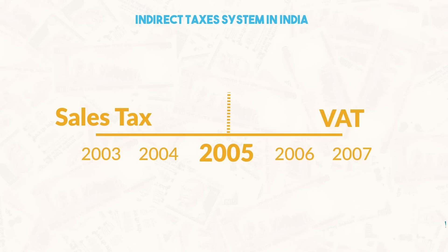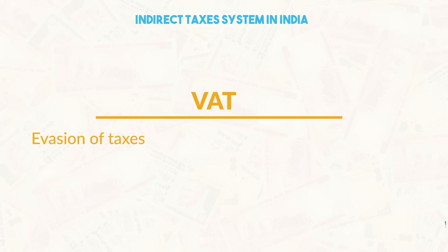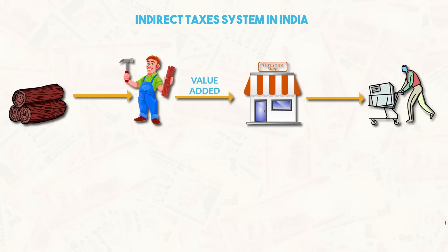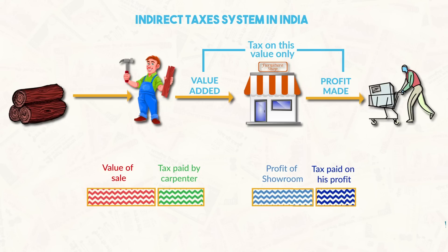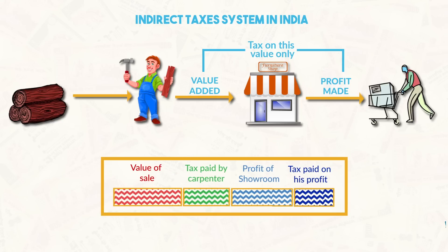Since 2005, sales tax in the states has been levied in the form of Value Added Tax. This reform was meant to check the evasion of taxes and correct the double taxation system. The term 'value addition' implies the increase in value of goods and services at each stage of production or transfer — that is, a multi-stage tax with the provision to allow input tax credit on the tax paid at the earlier stage.